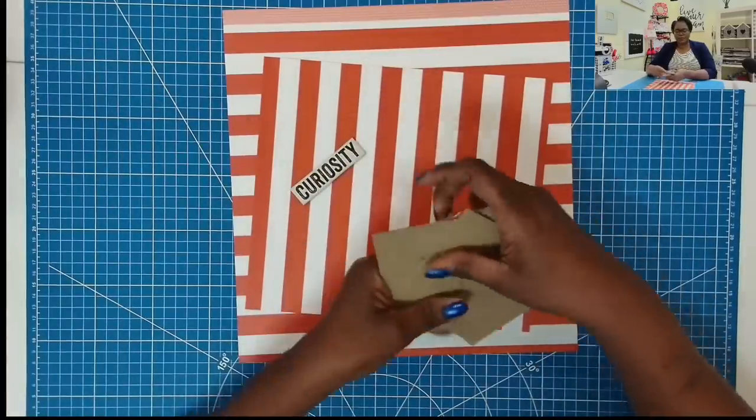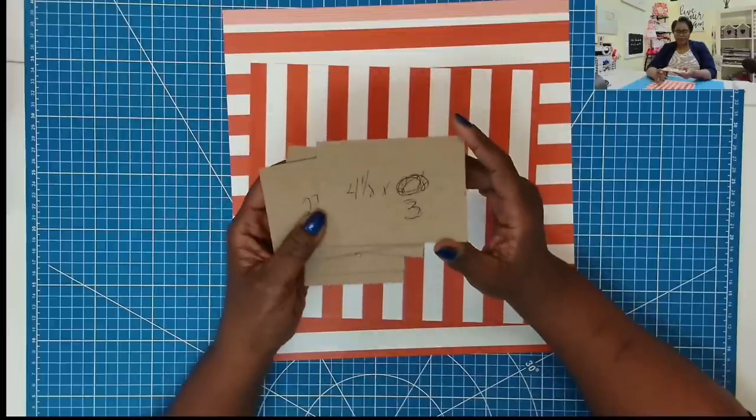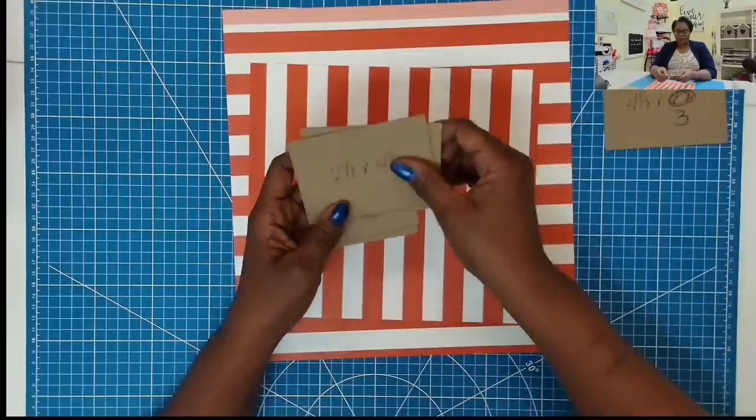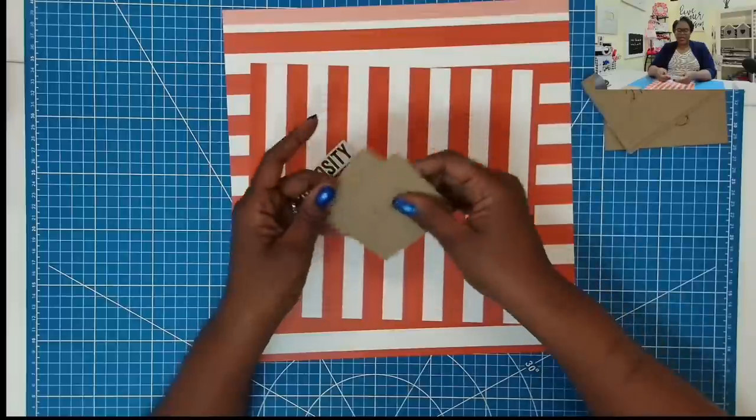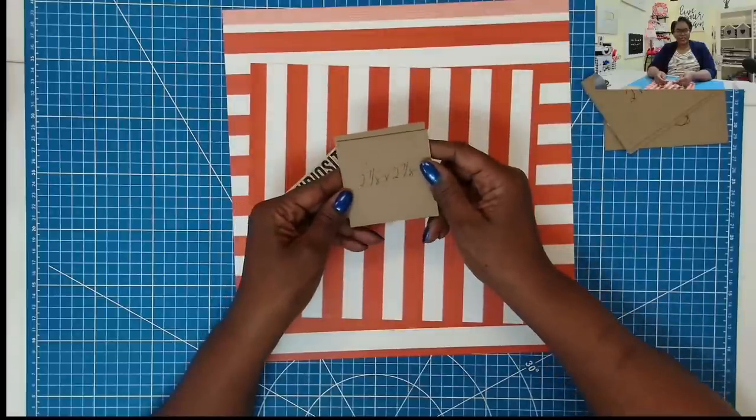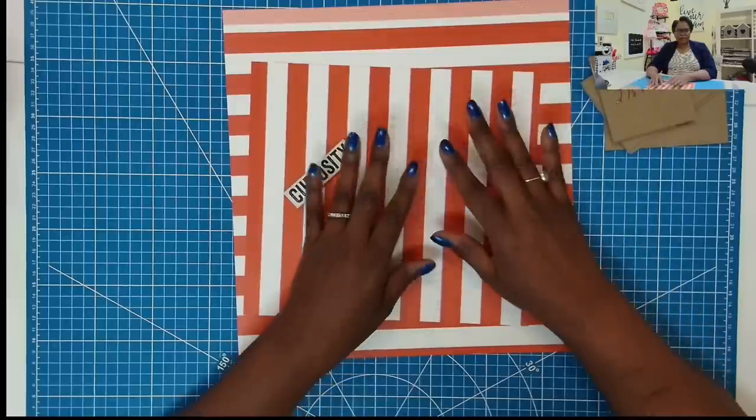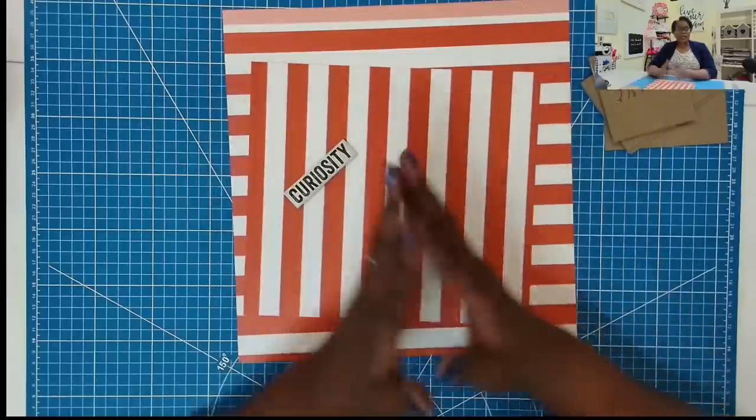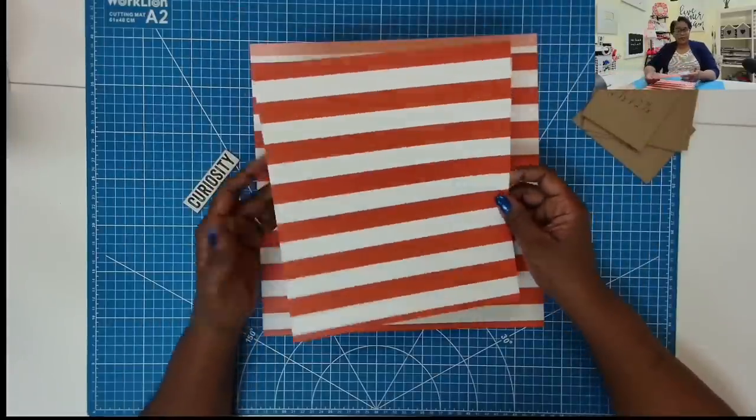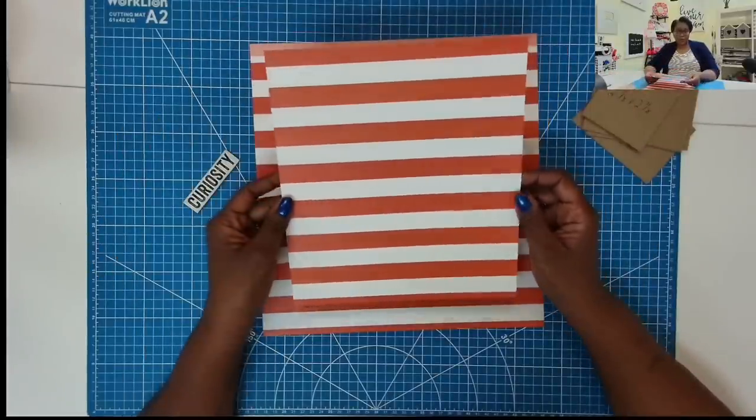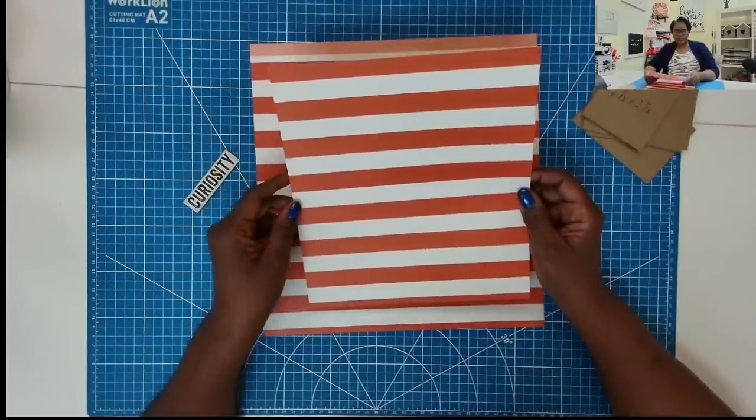So I'm using some scrap chipboard. I have one piece that is 4 1/8 by 3, two pieces that are 2 7/8 by 4 1/8, and two pieces that are 2 7/8 by 2 7/8. So you can see that I am able to take advantage of some scrap that I have in my stash. And then I have a piece of orange and white striped cardstock and this measures 9 by 10 1/8.